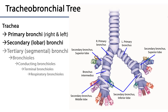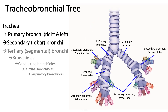We refer to this conductive pathway of air as the tracheobronchial tree. It doesn't take a lot of imagination to turn this 180 degrees vertically to see that this resembles a tree, with the trachea as the trunk and the remainder of the conductive pathway as the various limbs. The trachea divides into two primary bronchi, often called main stem bronchi — a right and a left. The right tends to be more robust and more linear, whereas the left tends to be smaller and more oblique.